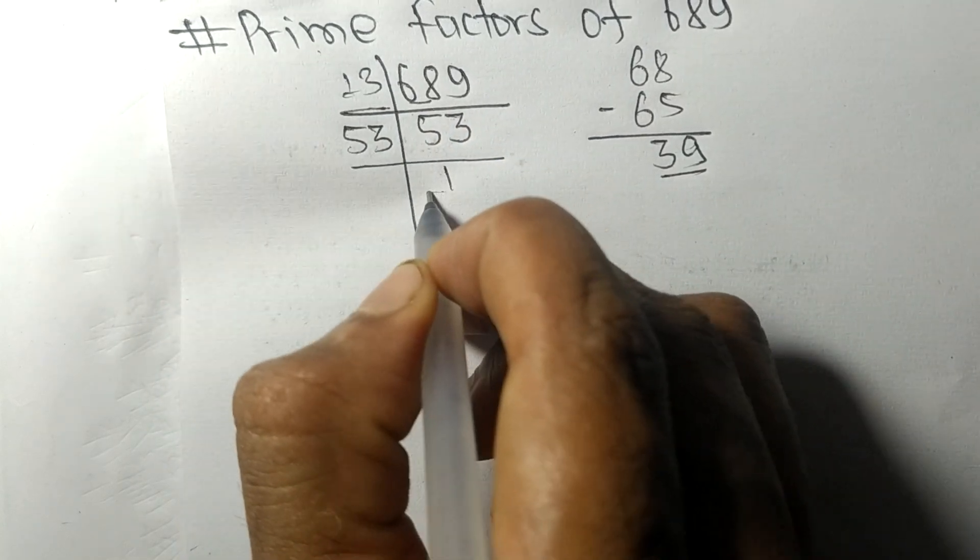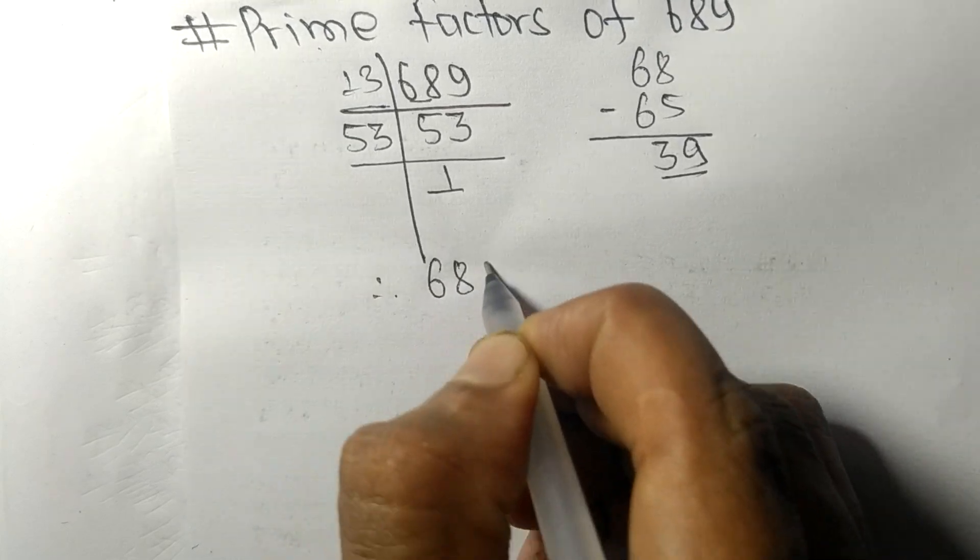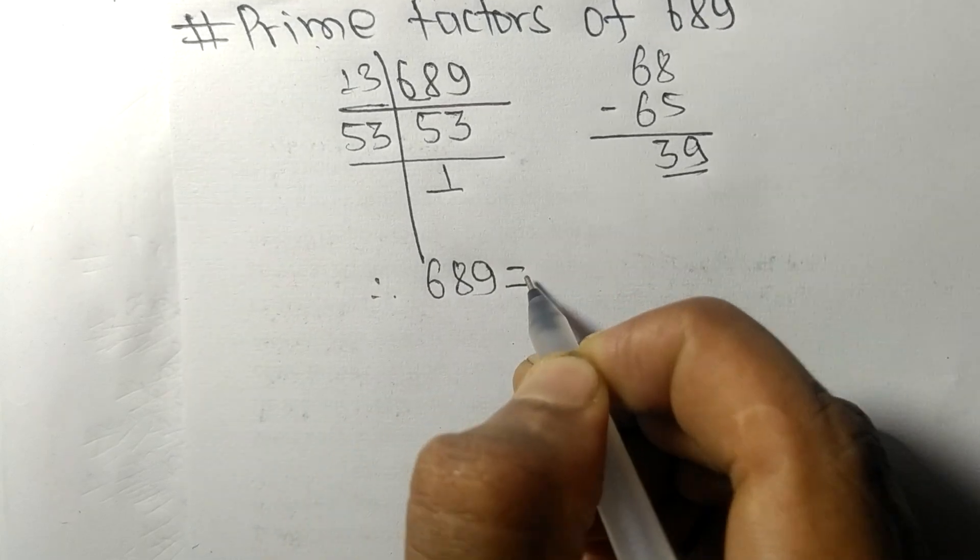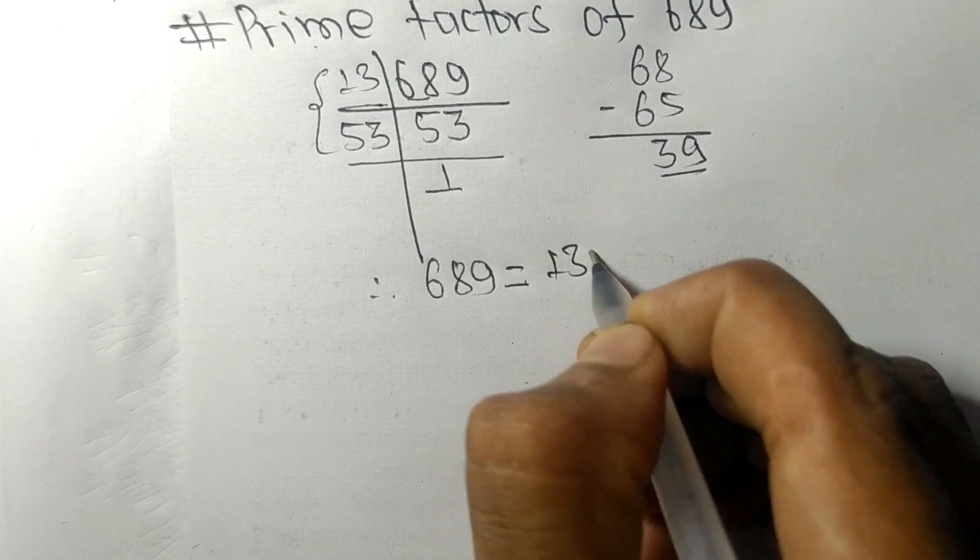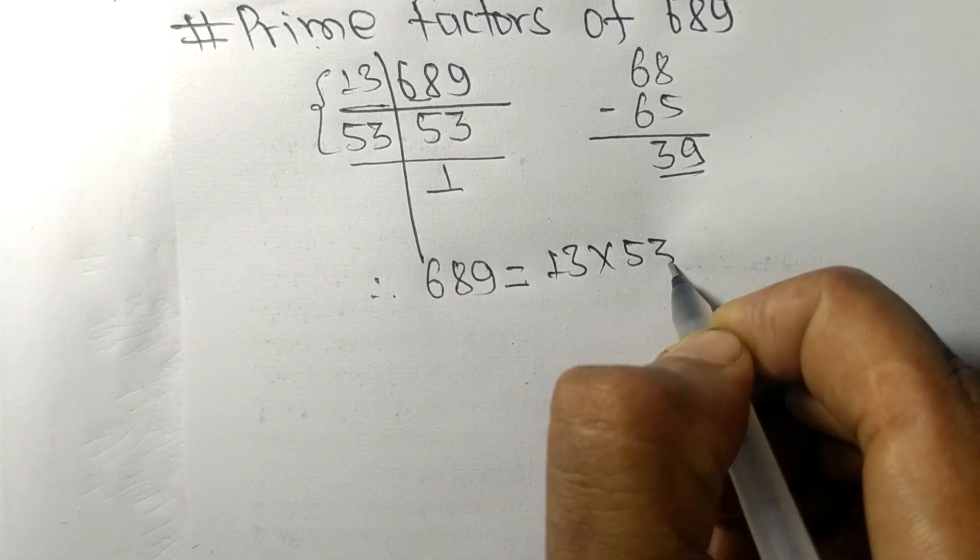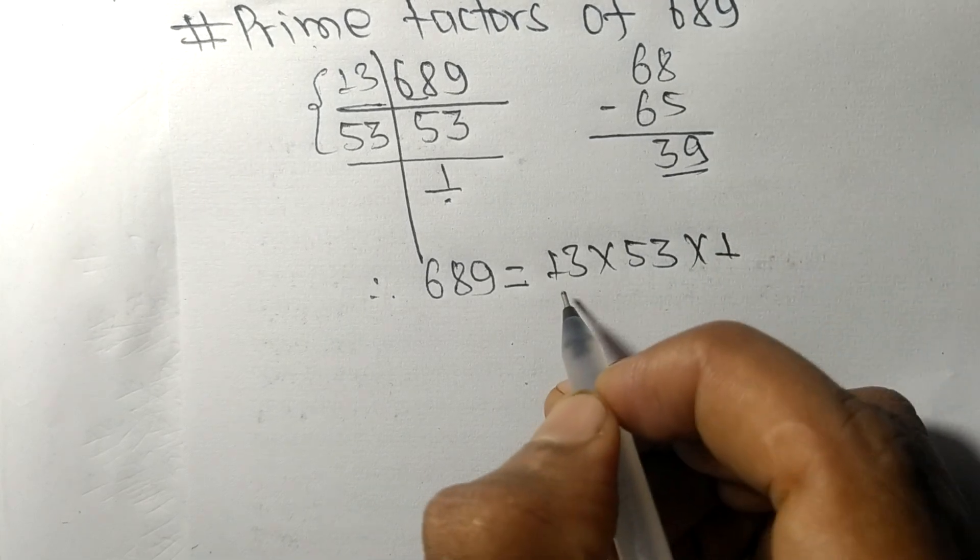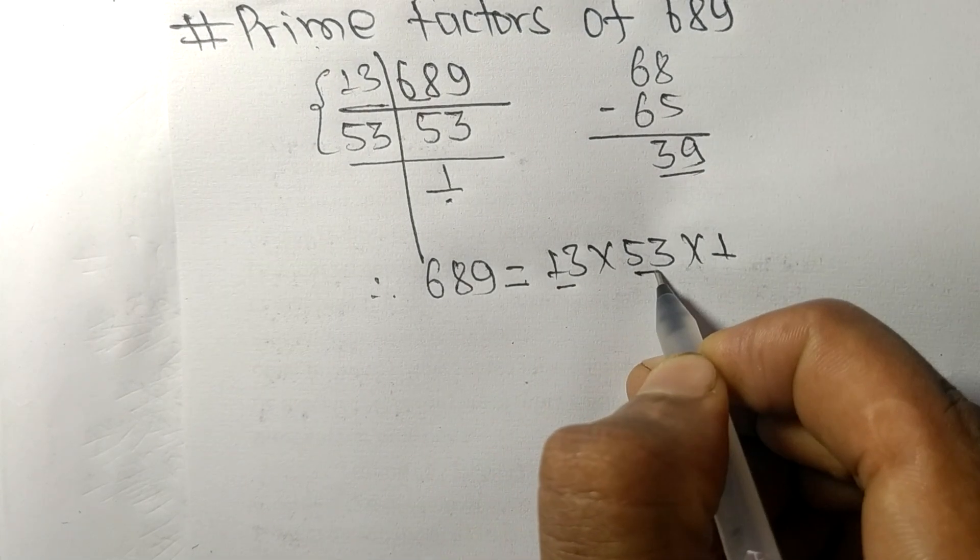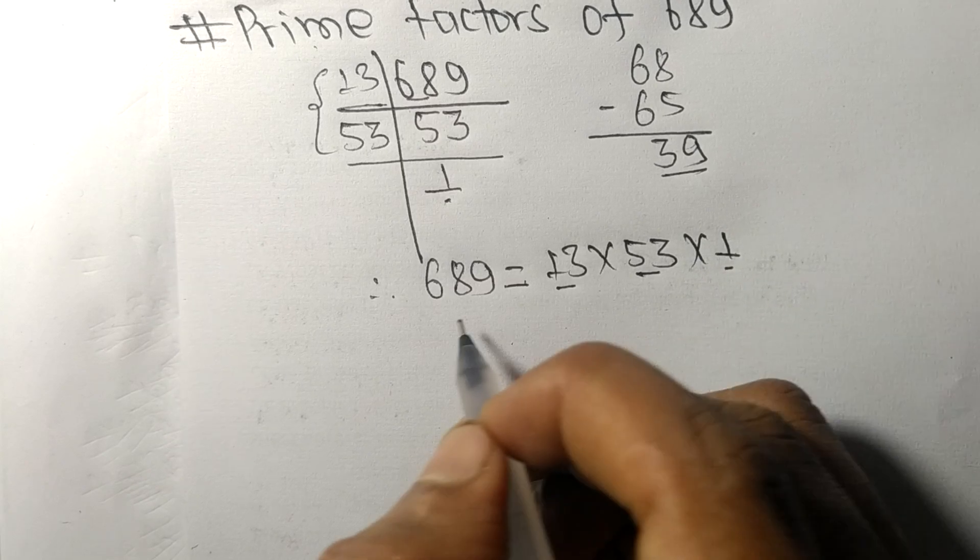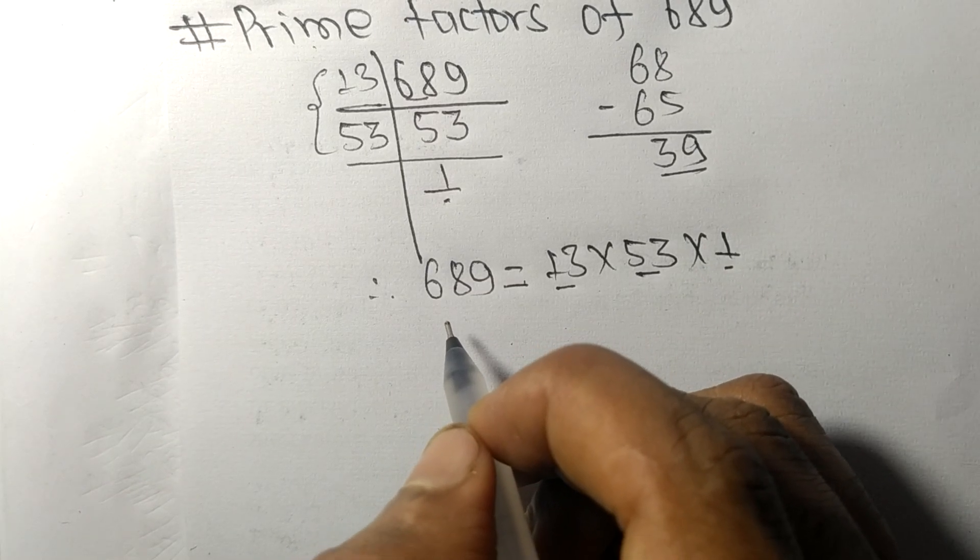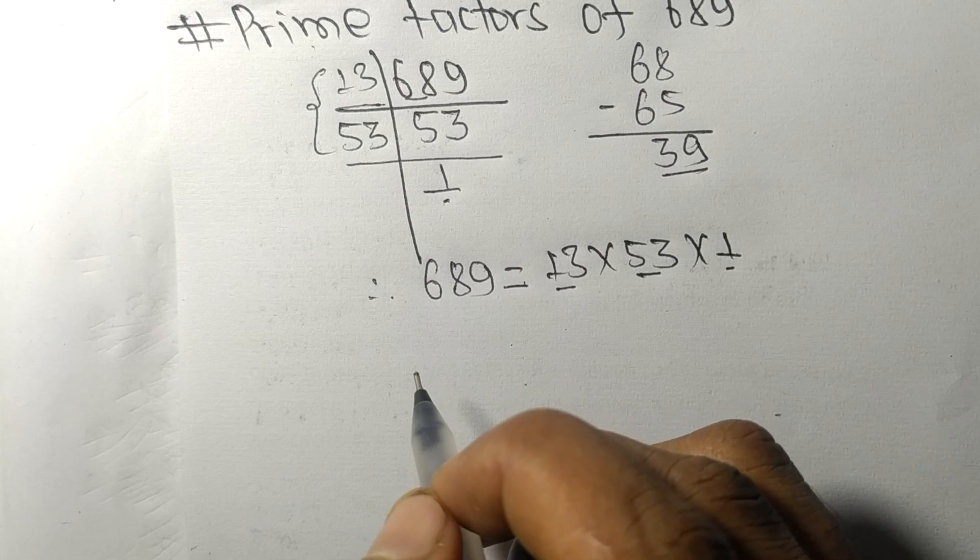And we get here 1. Therefore 689 is equal to, from this side it is 13 times 53, and from here it is 1. So 13, 53, and 1 are the prime factors of 689. This much for today and thanks for watching.